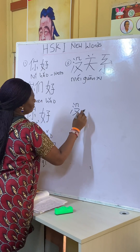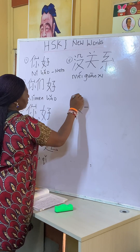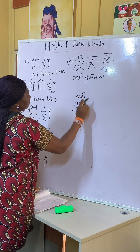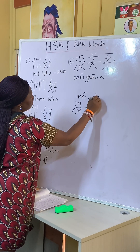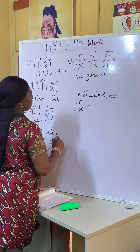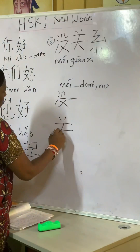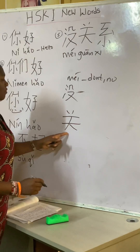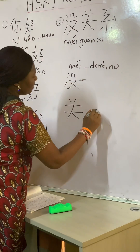Then 关 (guān) — only this is 关 (guān). 没 (méi) means don't or no, negative. Then 关 (guān) is the opposite of 开 (kāi).